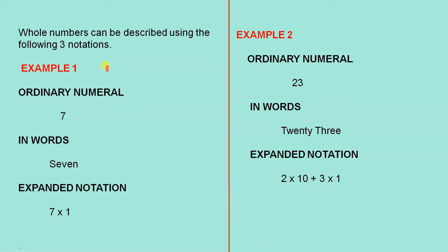The first example, as an ordinary numeral, we can just write the number seven. In words, we can write seven, we can actually spell it out. Expanded notation, seven times one, because this is seven ones, or seven single units. So they are the three different ways.